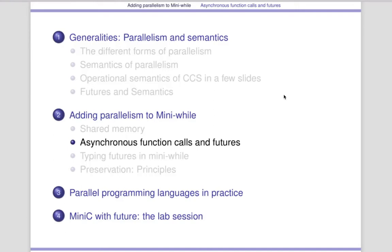Hello. In this video I will present a semantics for asynchronous function calls and futures for mini-while. Before that we've seen how to have shared memory in mini-while, so we can forget about that. We'll place ourselves in a setting where we don't care much about shared memory and will rather focus on parallelism due to futures and creation of tasks.